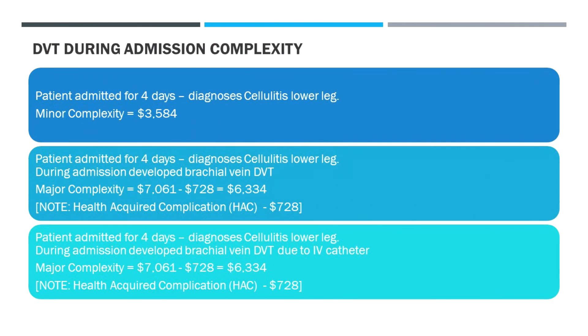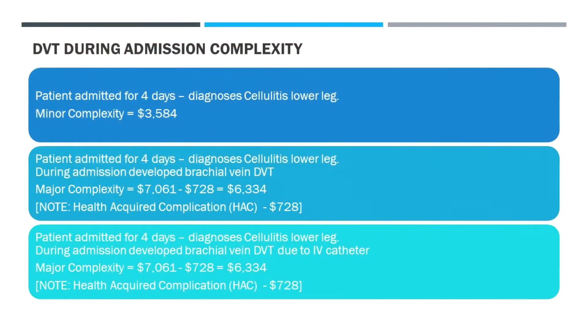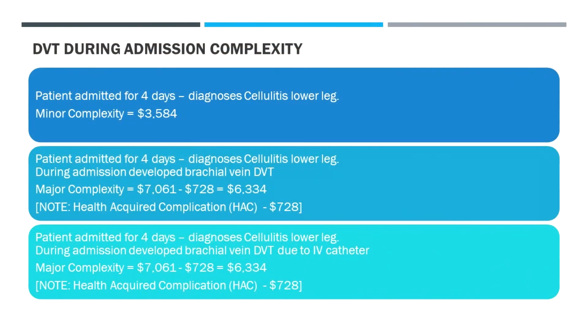Here's an example contrasting different coding according to documentation: a patient with cellulitis of the lower leg with apparently no complications gets minor complexity at three thousand five hundred dollars. If we then document that during the admission — due to the inflammation, infection, and immobility — they develop a brachial vein DVT, that gets major complexity. Because the DVT developed as an inpatient, it counts as a hospital-acquired complication (HAC), so there's a small funding penalty recognising it as a preventable complication. Overall it's still better to have that documented in terms of funding — roughly doubling income. If we clarify it as a brachial vein DVT due to the IV cannula inserted for IV flucloxacillin for the cellulitis, that likewise codes to major complexity with an associated HAC. We'll talk about HACs in another talk.